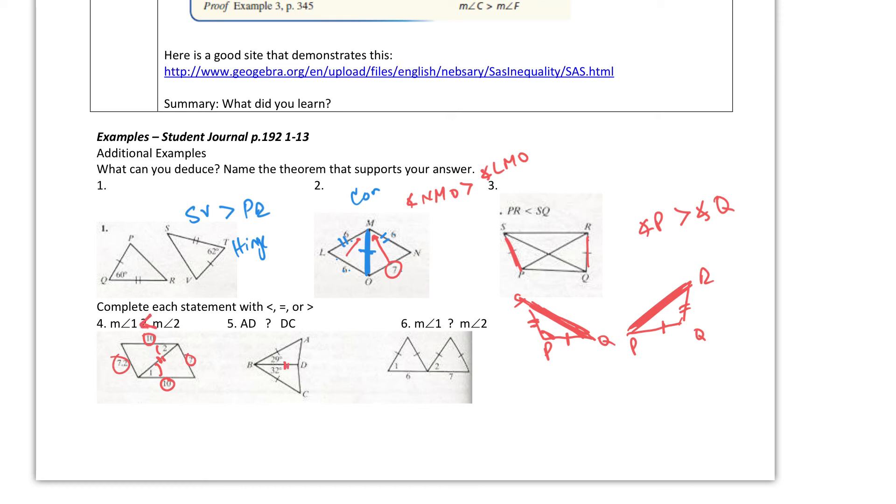On the next one, they both share this, right, and then that's congruent, so this is larger, so that means DC will be bigger.